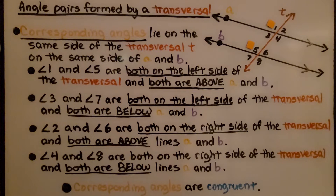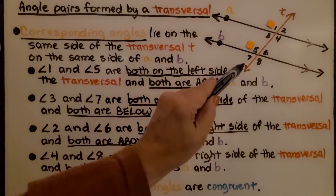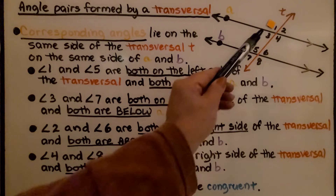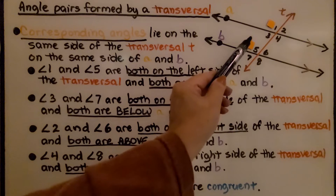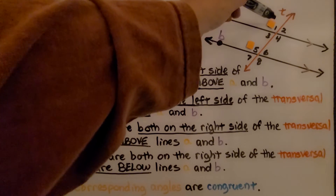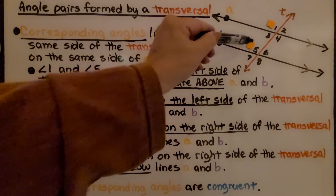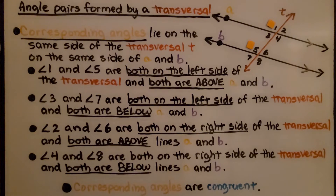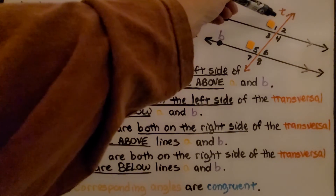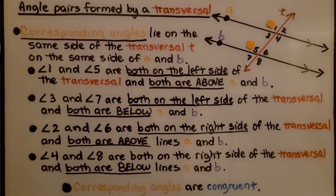Let's talk about angle pairs formed by a transversal. Corresponding angles lie on the same side of transversal T and on the same side of lines A and B. Angles 1 and 5 are corresponding angles — they're both on the left side of the transversal, and both are above lines A and B respectively.